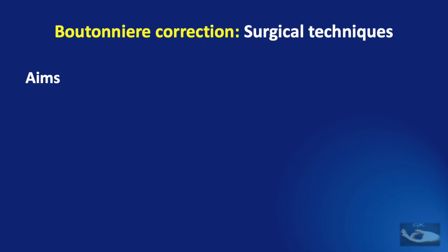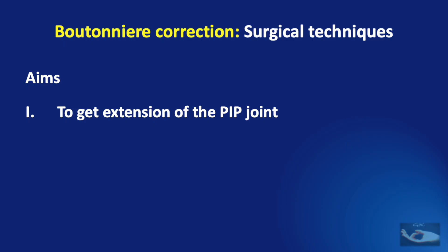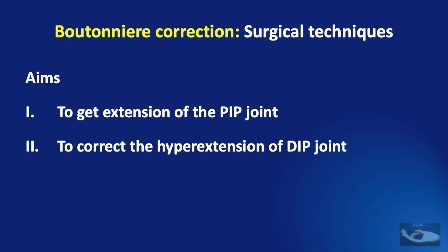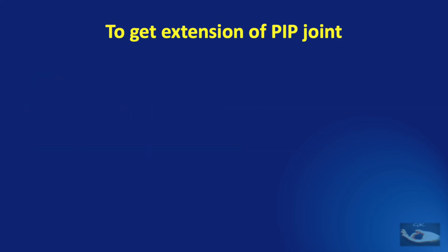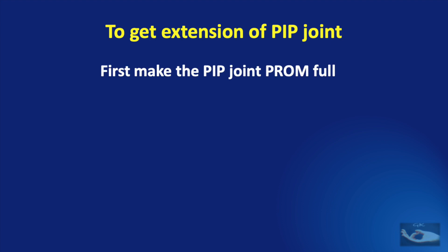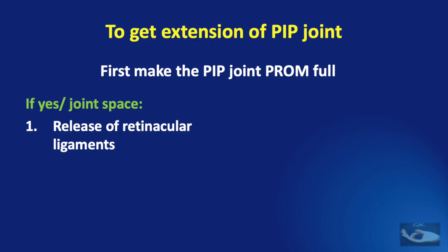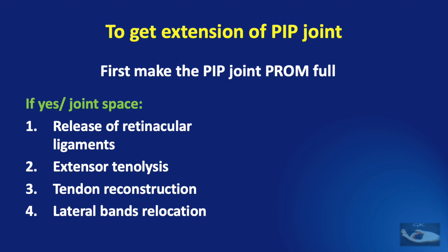There are two main aims in surgical techniques for correction of boutonniere deformity: to get active extension of the proximal interphalangeal joint, and to correct the hyperextension at the distal interphalangeal joint. The first step is to make the PIP joint passive range of movement as full as possible. If successful, or if there is good joint space on x-ray, there are four important steps: release of retinacular ligaments — both transverse and oblique — extensor tenolysis, tendon reconstruction, and lateral band relocation.